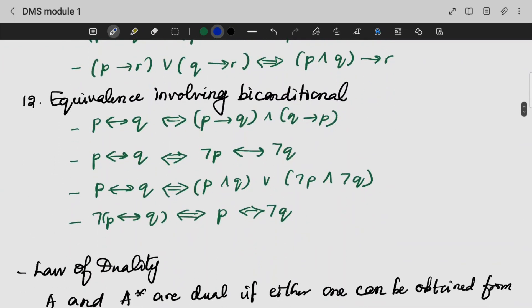Equivalence involving bi-conditional conditions. If it is a bi-conditional statement P bi-conditional Q, it means P implies Q and Q implies P.